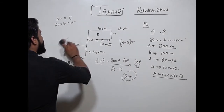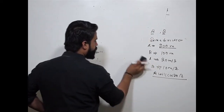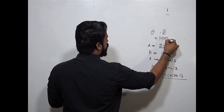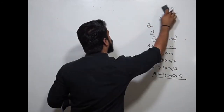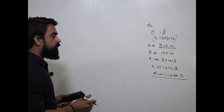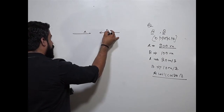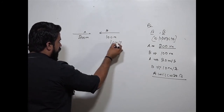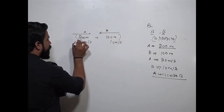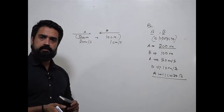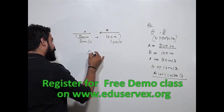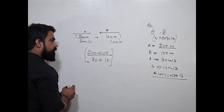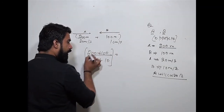The second question: if both trains are moving in opposite directions. This is A — 200 meters — and this is B — 100 meters. The speed of B is 10 meters per second and A is 20 meters per second. When moving in opposite directions, they cover each other's lengths, so the distance covered is 200 plus 100 equals 300 meters. The relative speed is 20 plus 10 equals 30, because they are moving in opposite directions we add the speeds.